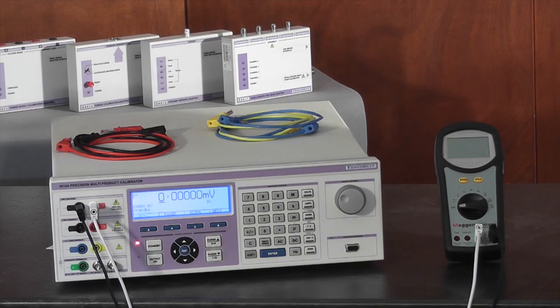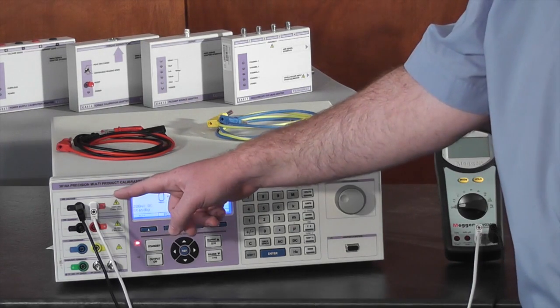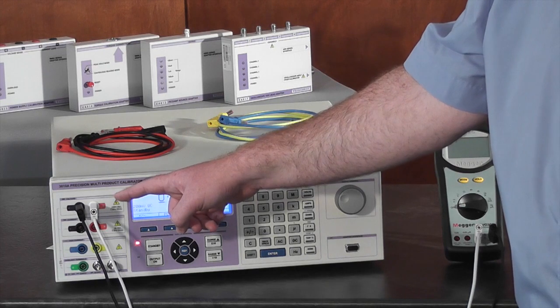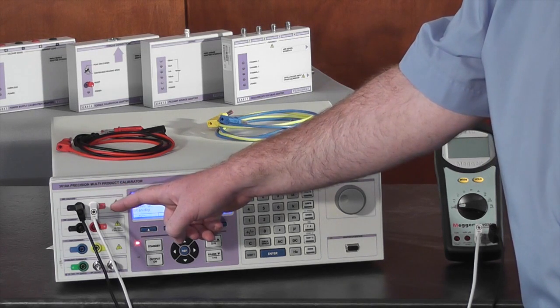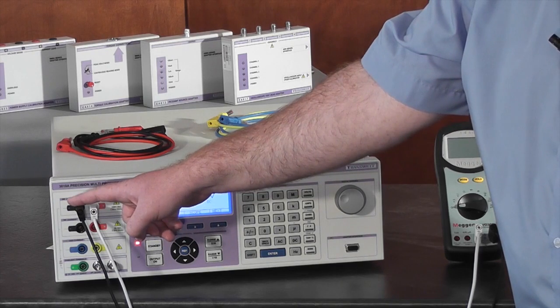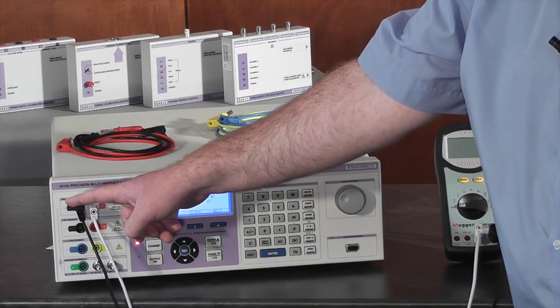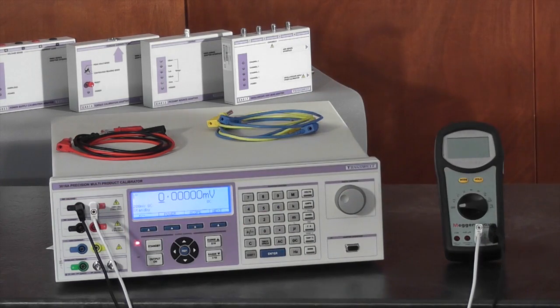The first function we will be calibrating is the voltage input. Connect the multimeter to the voltage terminals on the 3000A. The 3000A's voltage terminals are color-coded and the active output indicated with an LED to enable simple connections.